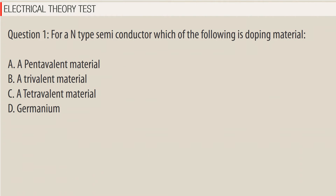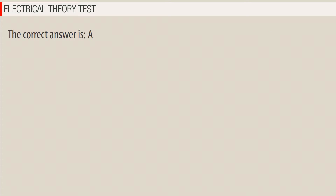Question 1. For an N-type semiconductor, which of the following is the doping material? A. A pentavalent material. B. A trivalent material. C. A tetravalent material. D. Germanium. The correct answer is A — a pentavalent material.